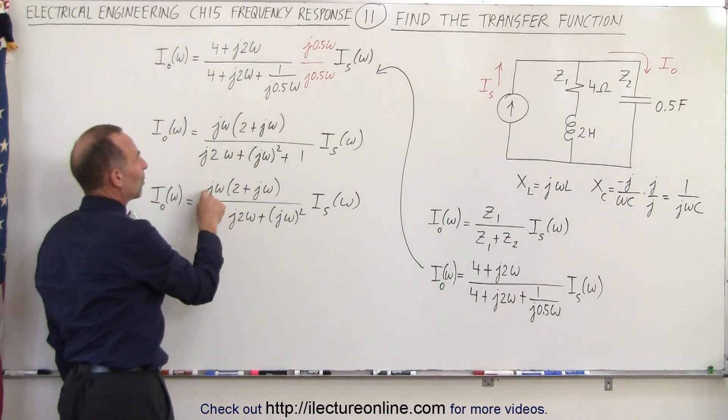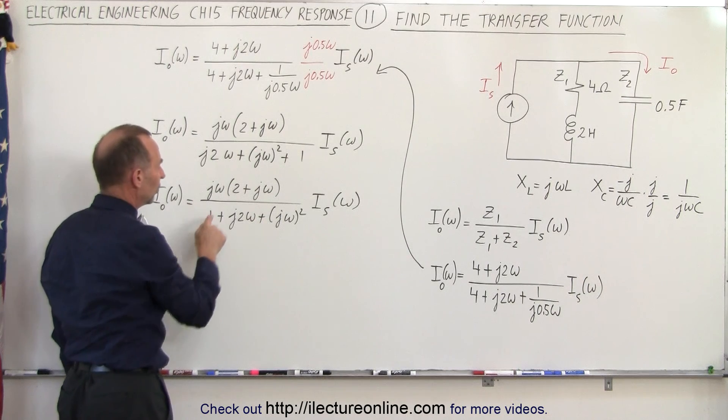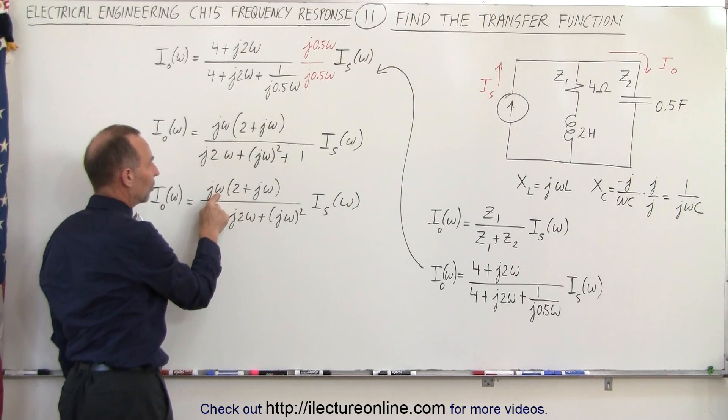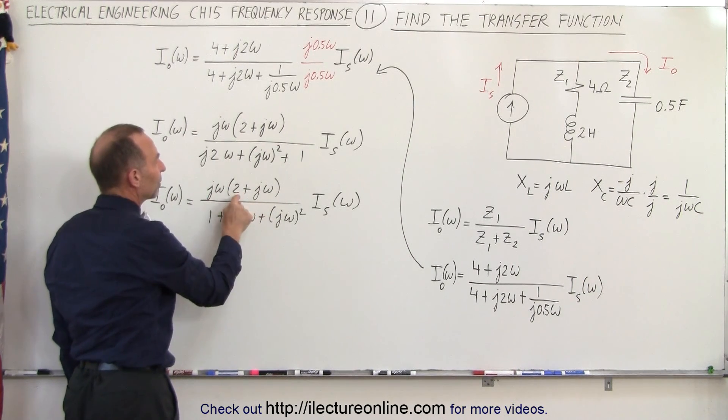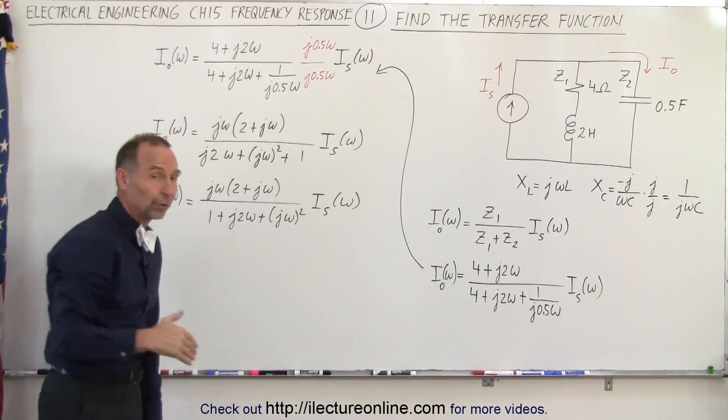The zeros were found when we found the values for J omega to make the numerator 0. Namely, J omega equals 0 and J omega equals negative 2 make the numerator 0. That's where the zeros are.